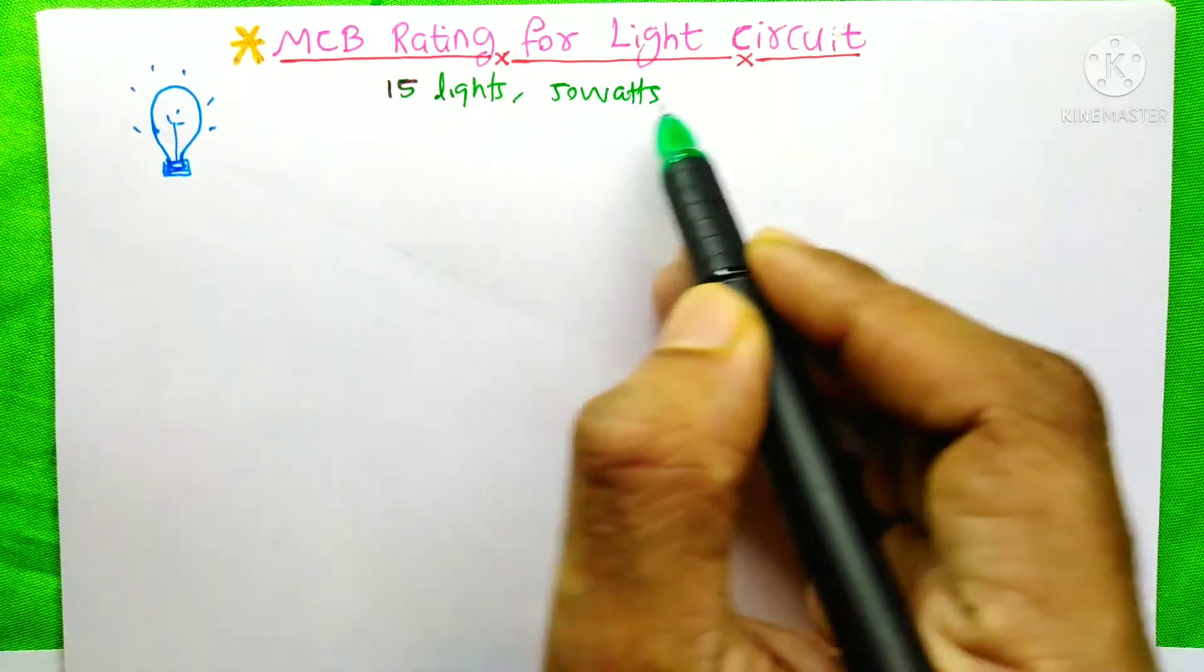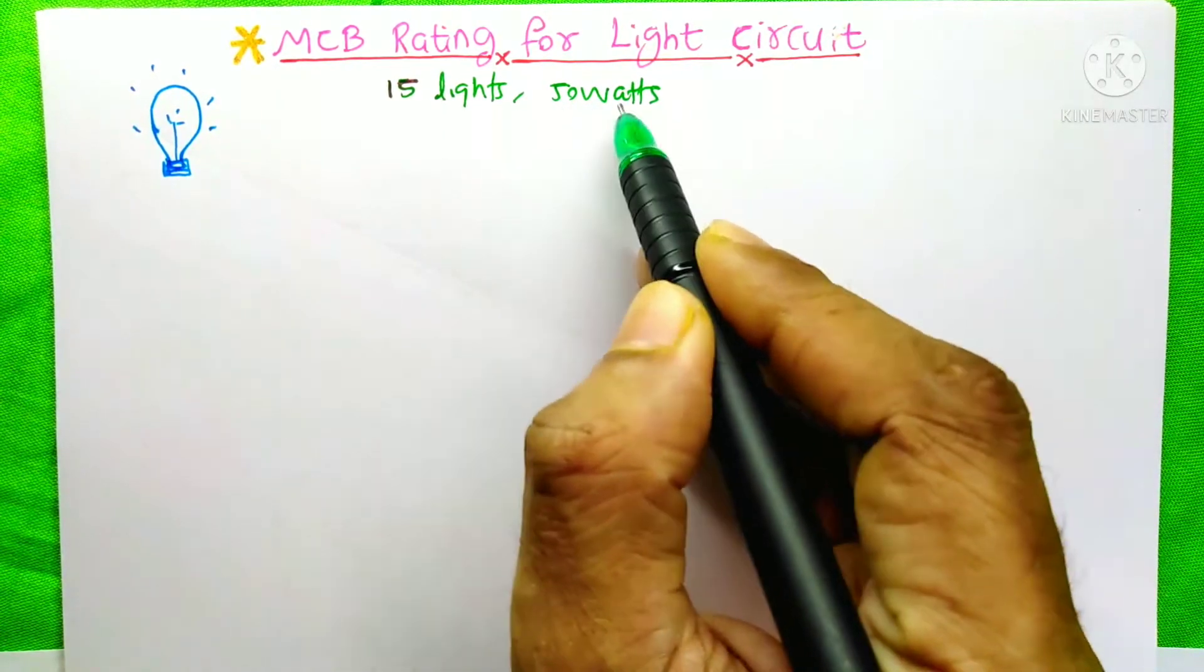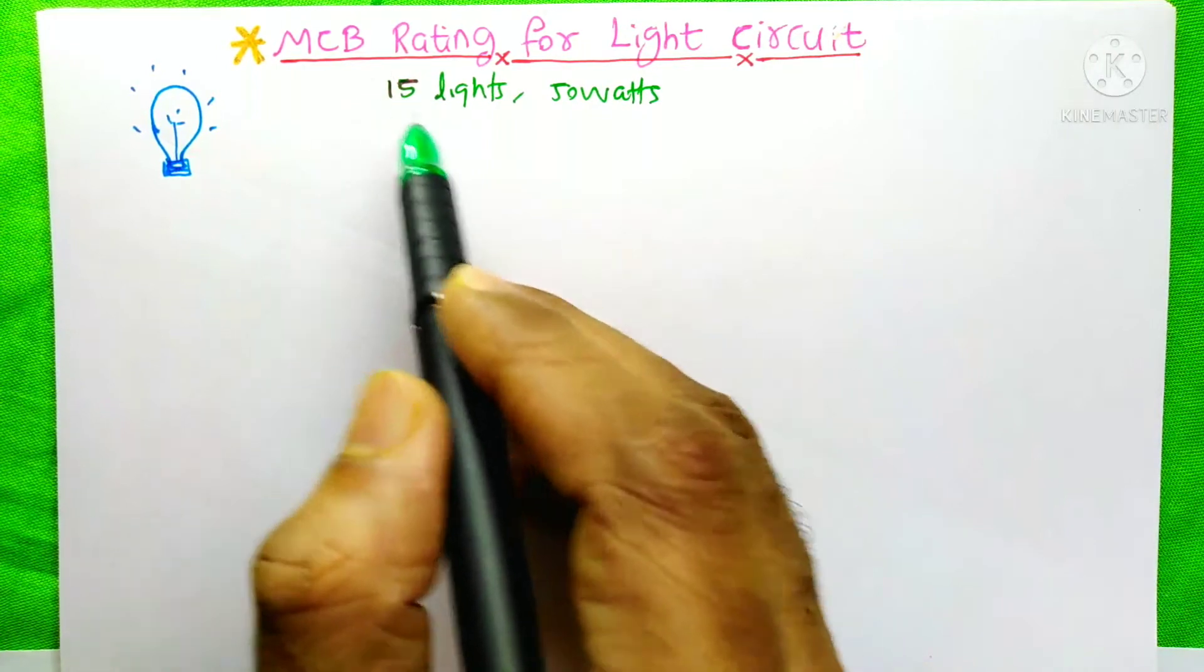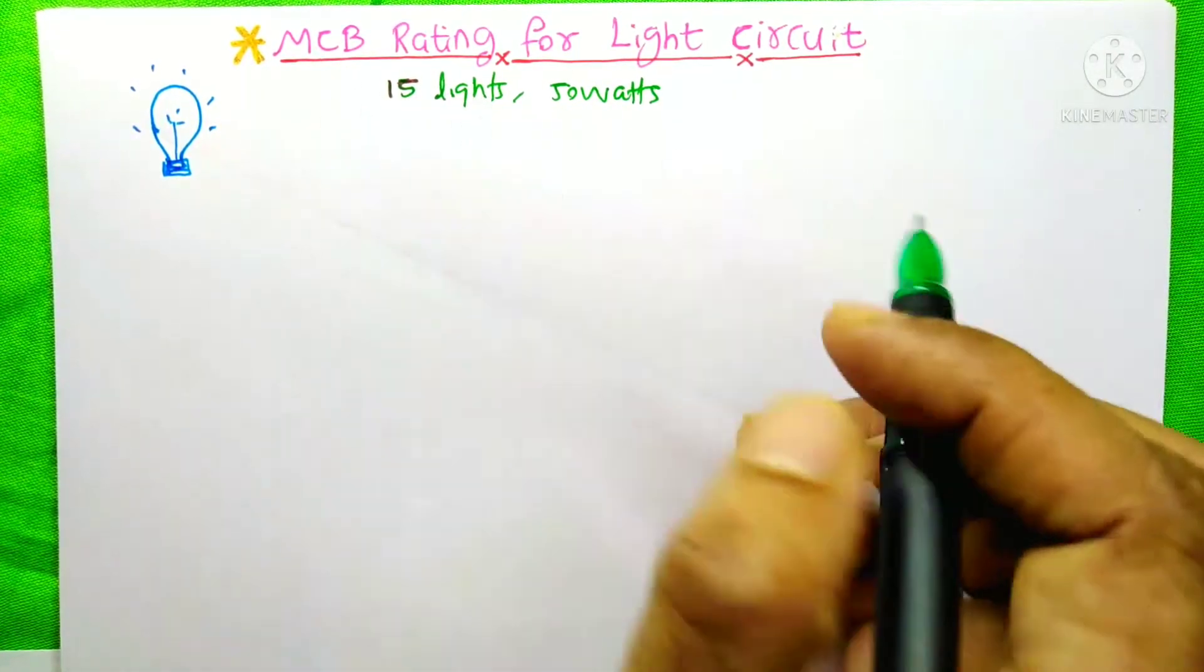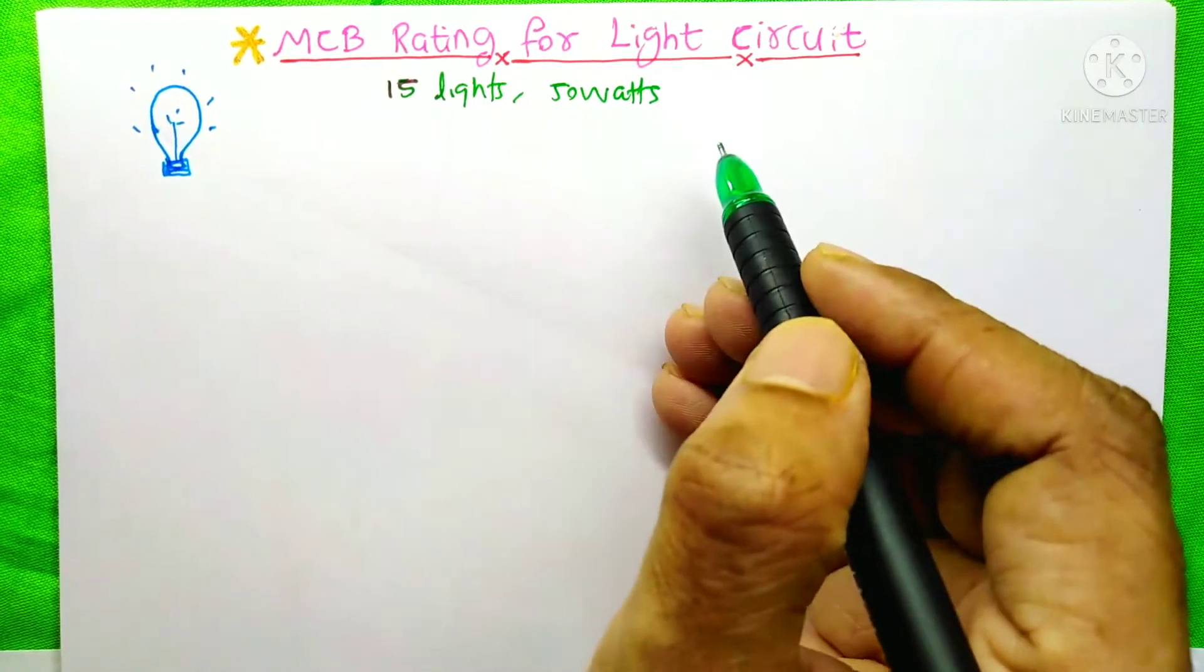Suppose we have 15 lights, each of about 50 watts. If you want to connect all 15 lights on a single circuit, what MCB rating do you need to choose?